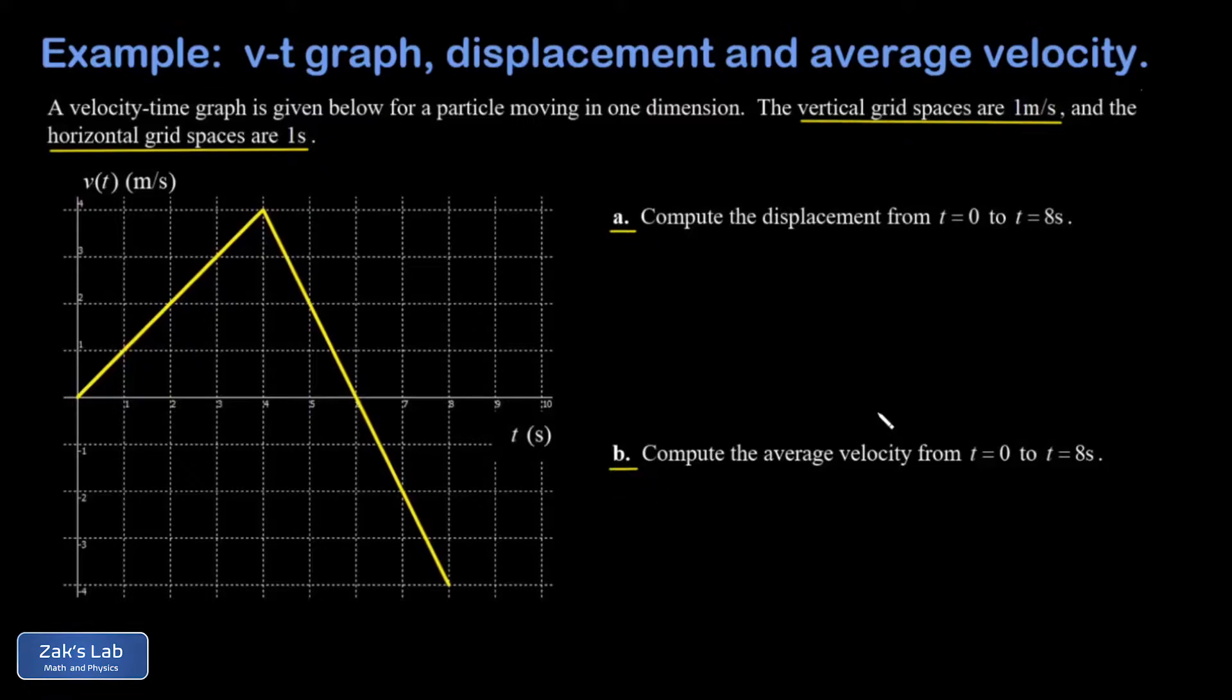Part a says compute the displacement from t equals zero to t equals eight seconds, which is right here. We have to remember the displacement is given by the signed area bounded under this curve. It cuts off right there at t equals eight.